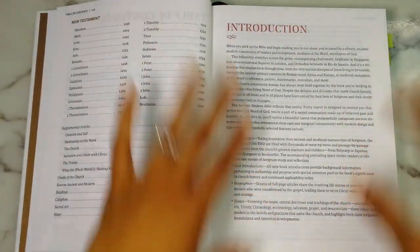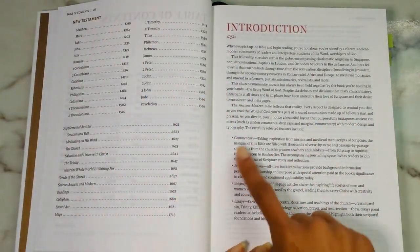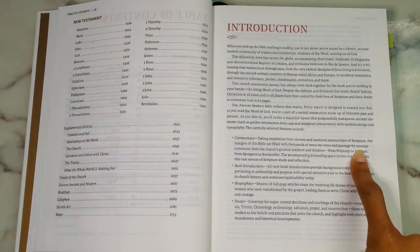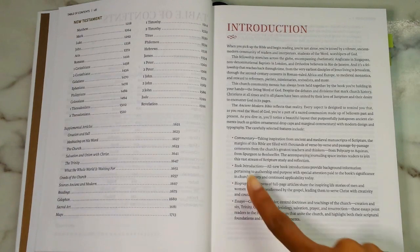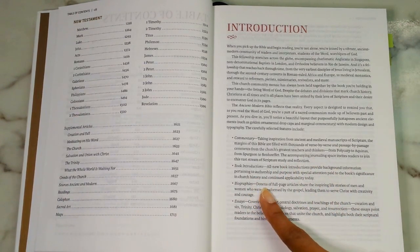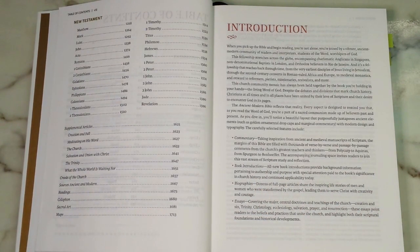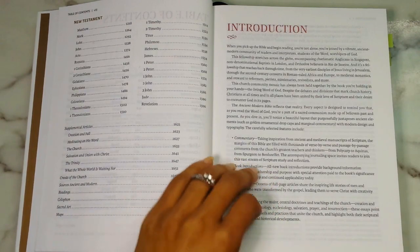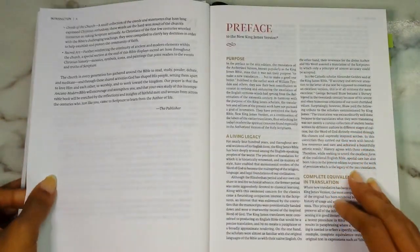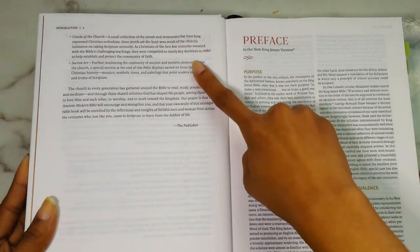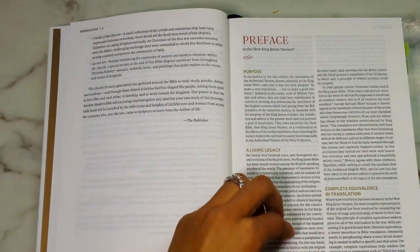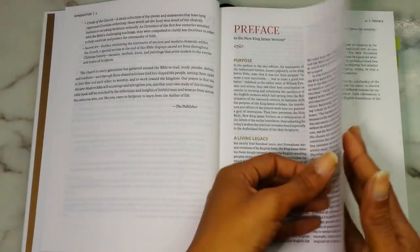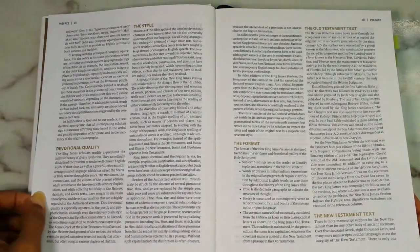You get into your table of contents with your Old Testament, then your New Testament, and then your supplemental articles and stuff like that. The Bible basically has commentaries which are like verse by verse or passage by passage comments from various teachers and thinkers. You have book introductions, biographies of different men and women that were transformed by the gospel, essays covering different topics, creeds of the church, and sacred arts in the back. Then you get your preface to the NKJV.